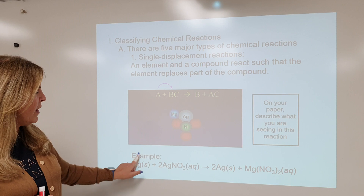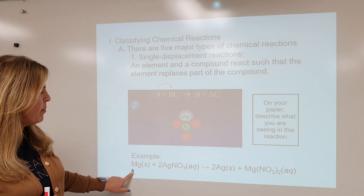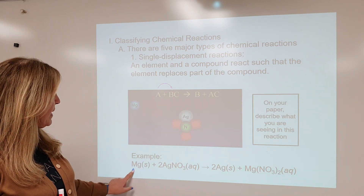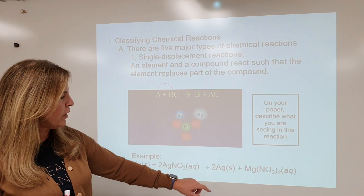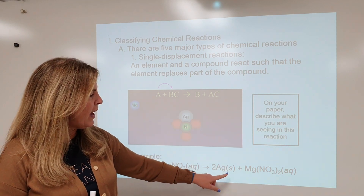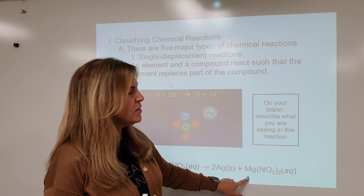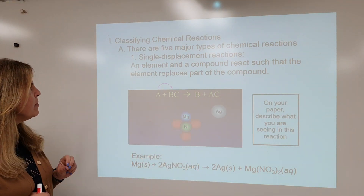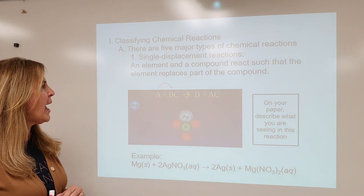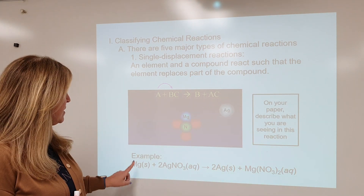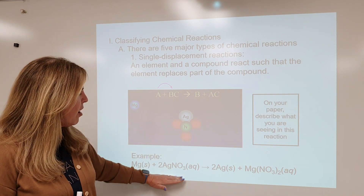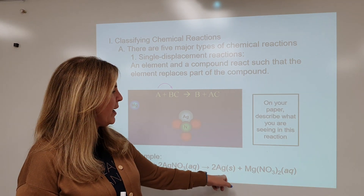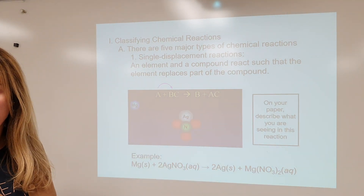Here we have element magnesium plus compound silver nitrate. The magnesium is kicking off the silver, so now the silver is by itself and the magnesium is with the nitrate. In a single displacement reaction: element plus compound, and partners trading places. Magnesium is a metal, and in the compound it's replacing the metal, making silver by itself and magnesium with the nitrate.